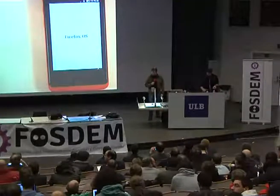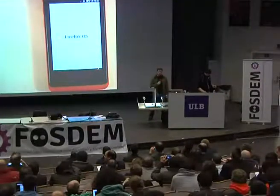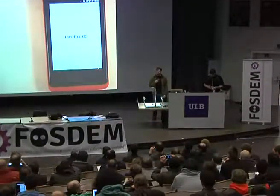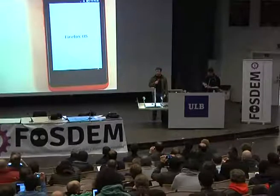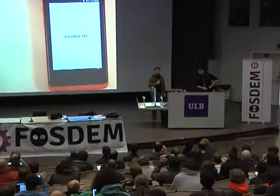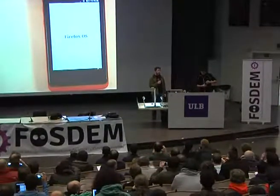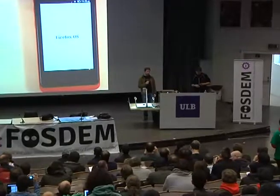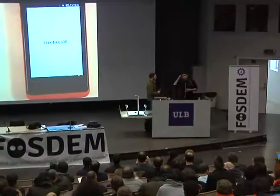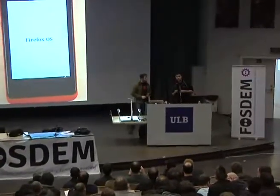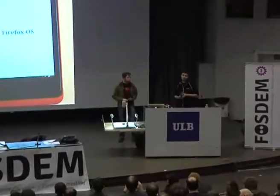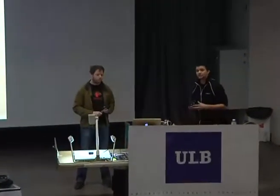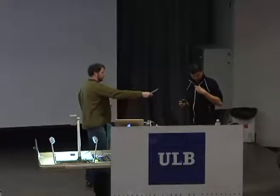Let's get started. My name is Jonas Hicking, I'm with Mozilla, I am the tech lead for the Web API team. And I'm Vivian Nicolas, I work for Mozilla and I'm the tech lead for Gaia, the front-end part of the Firefox OS project.